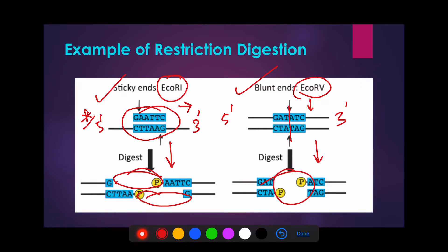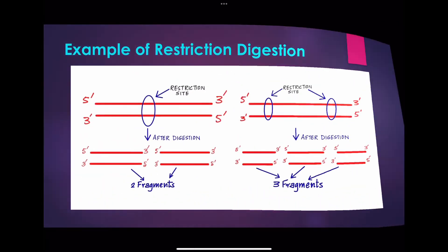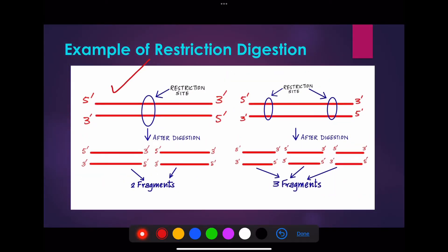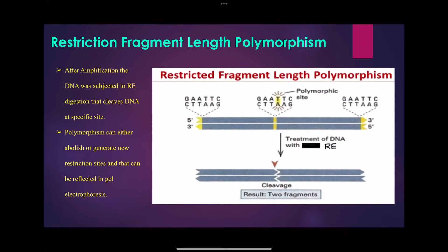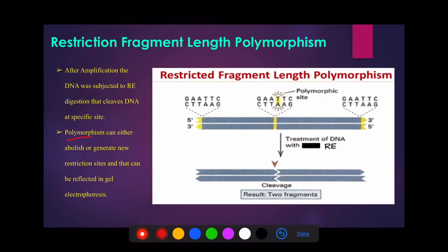By restriction enzyme digestion, a target DNA fragment with one restriction site produces two fragments after digestion, two restriction sites produce three fragments after digestion, and so on. Due to DNA polymorphism, a restriction digestion site in a DNA fragment can either be abolished or freshly generated.